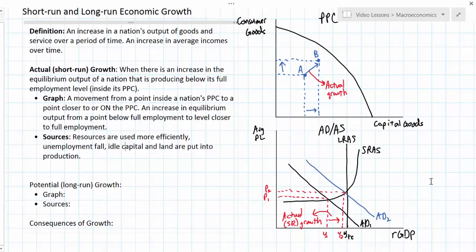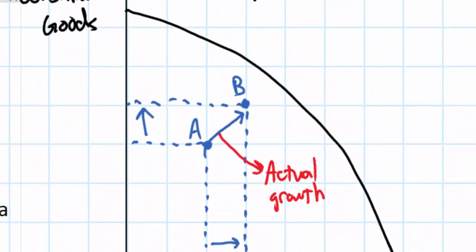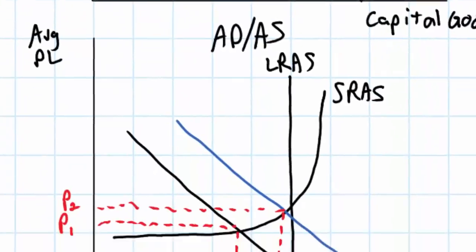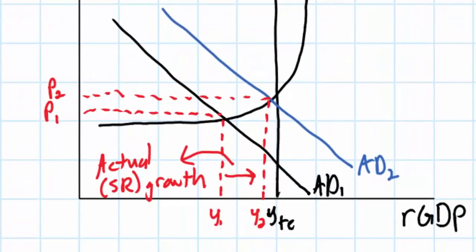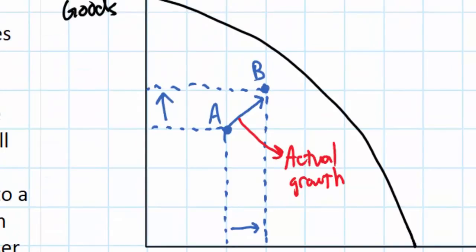An economy has just gone from producing at an inefficient level — Y1 in the ADAS graph or point A in the PPC graph — towards a more efficient level — Y2 in the ADAS graph or point B in the PPC. So let's now distinguish between short-run economic growth and what we call potential growth or long-run economic growth.